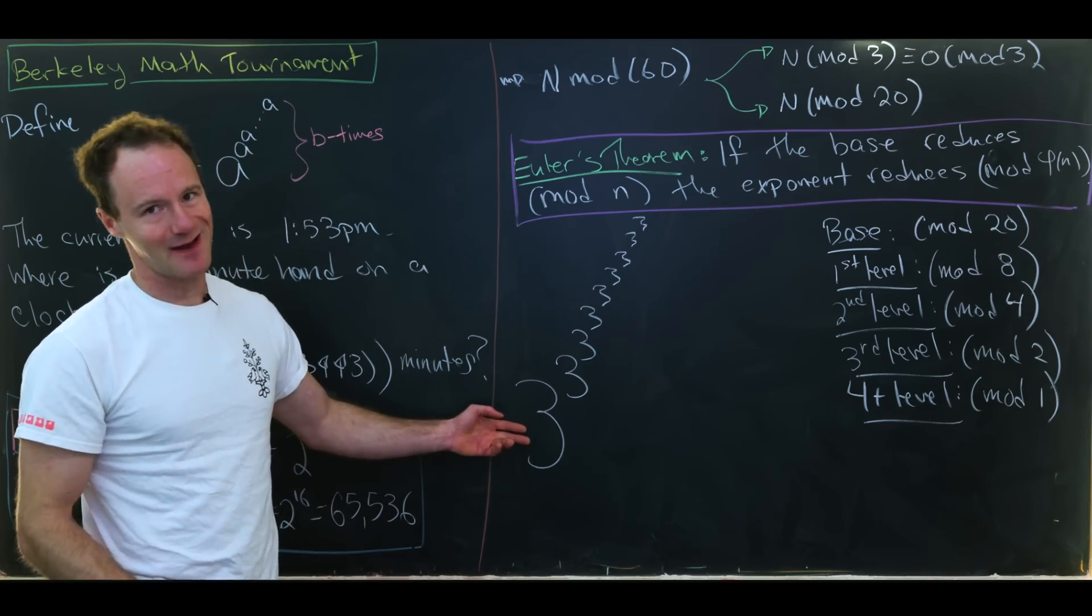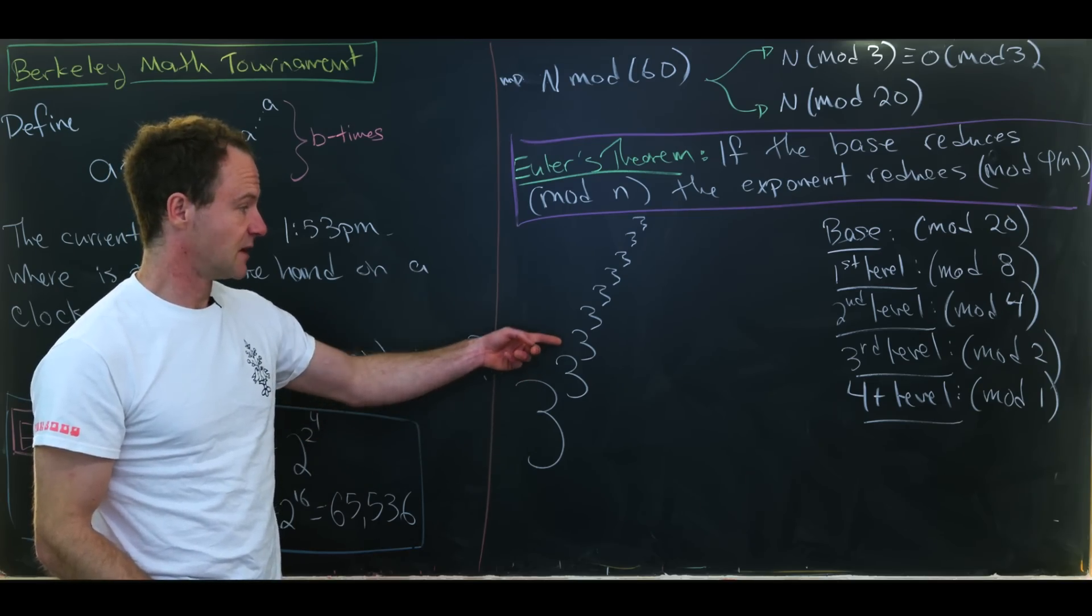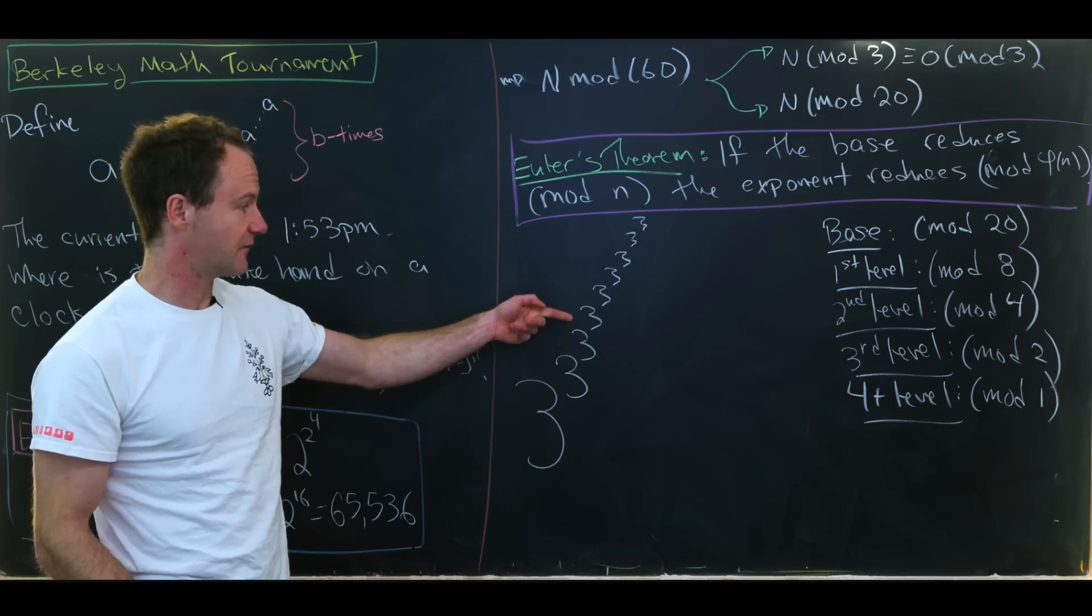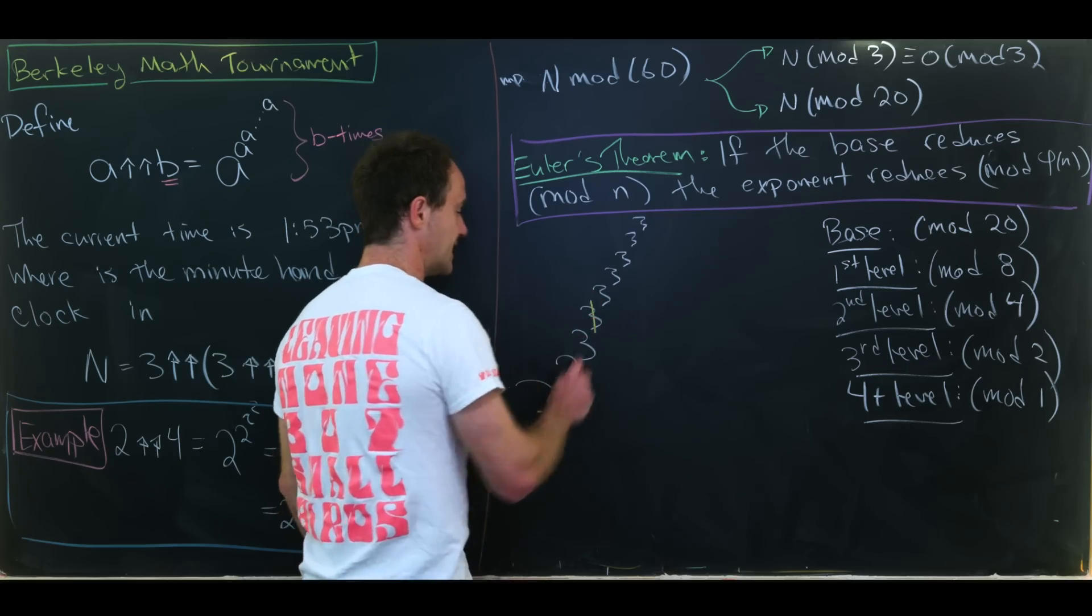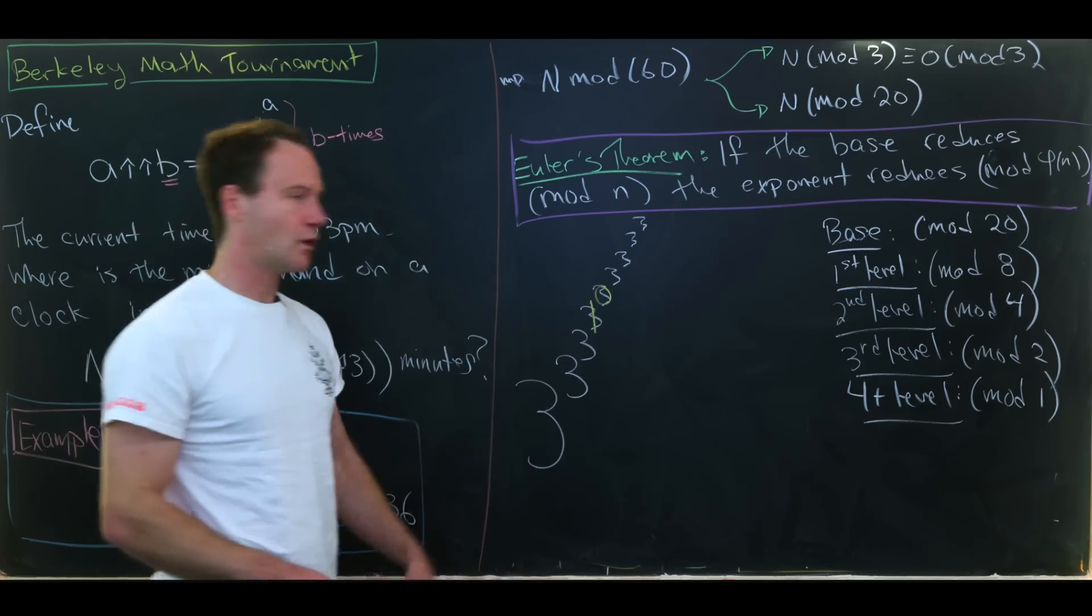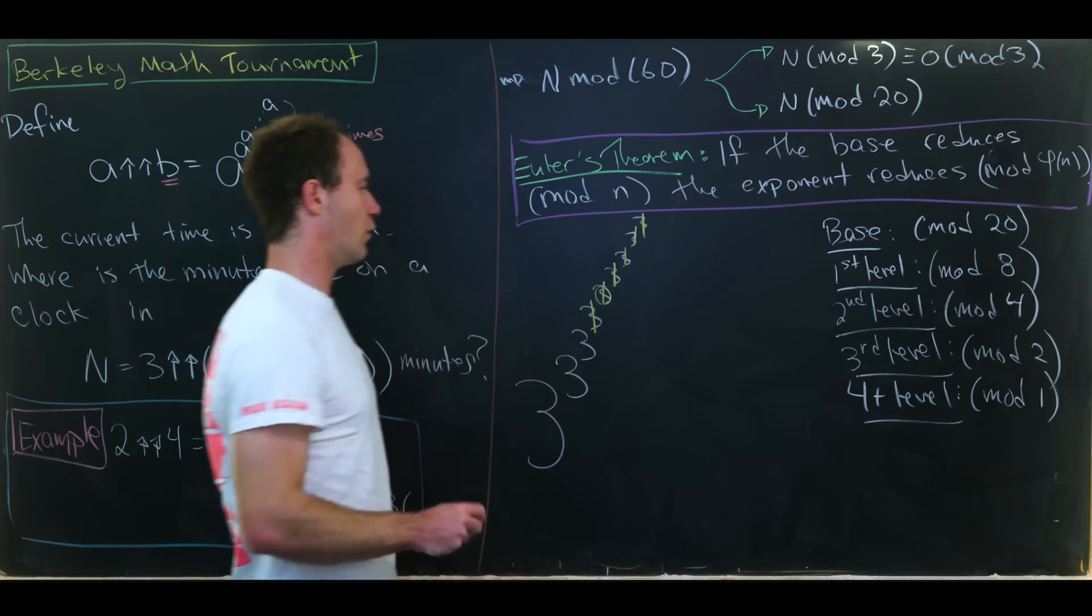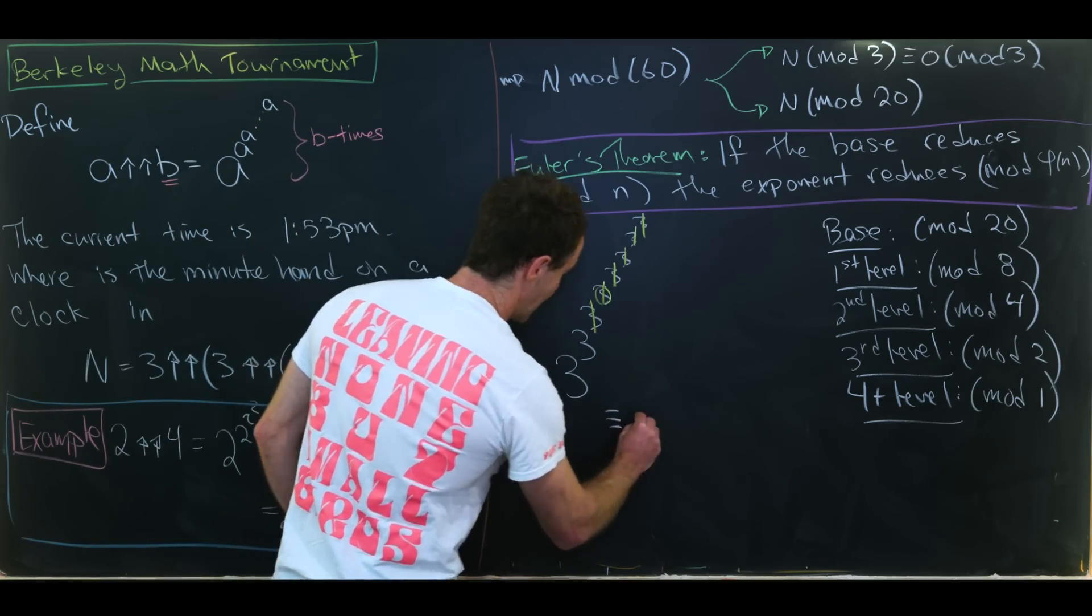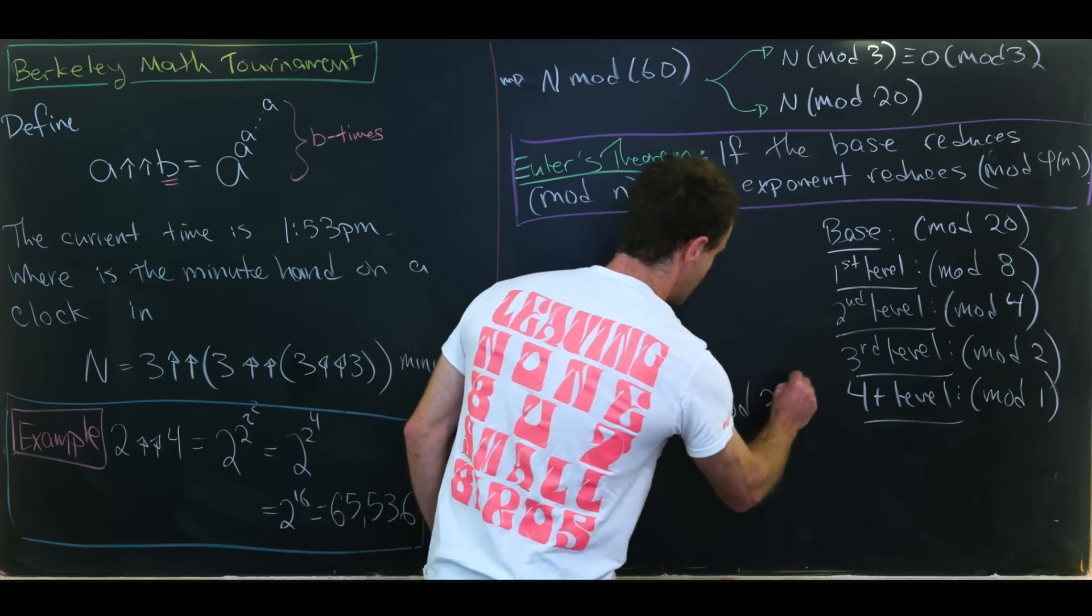So let's do some simplification here. So the base reducing that mod 20 is not super helpful here because it's already smaller than 20. Same thing as the first level. But the second level is also not super helpful because that's between 1 and 4. But here we're not between 1 and 2 so we can start reducing. So 3 is the same thing as 1 mod 2. And then 3 is the same thing as 0 mod 1 which is actually the same thing as 1 mod 1. So that means we can replace all of these with 1s all the way up. But that means that this whole thing is congruent to 3 to the 3 to the 3 modulo 20.